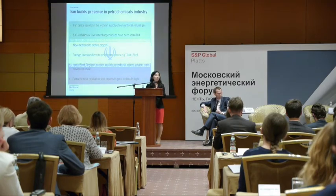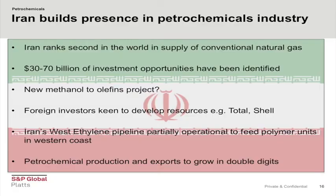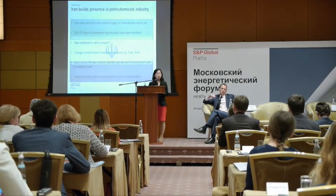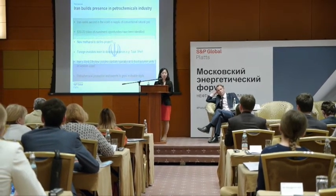What about Iran? How will recent developments in politics change the industry? With the relief of economic and financial sanctions and the improvement of diplomatic ties, Iran has become a hot spot for investment. Iran ranks second in the world in terms of supply of conventional natural gas, and between $30 to $70 billion of investment opportunities in the petrochemical sector have already been identified. One example is the building of Iran's first methanol-to-olefins unit, which will convert methanol — derived from natural gas — into products such as ethylene and gasoline, aiming to use Iran's huge gas reserves.